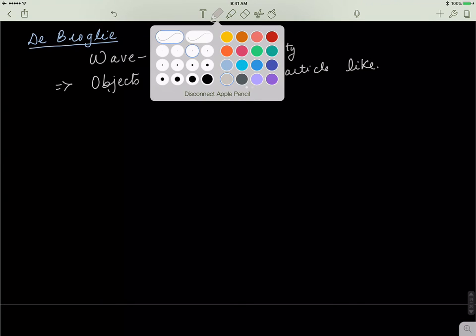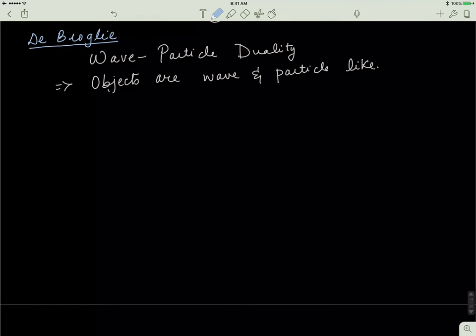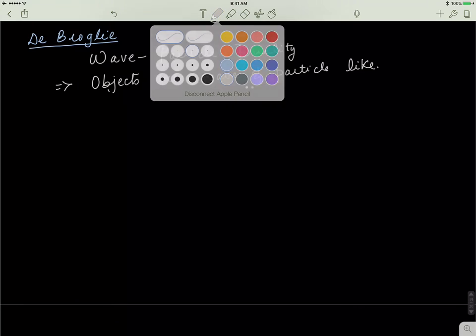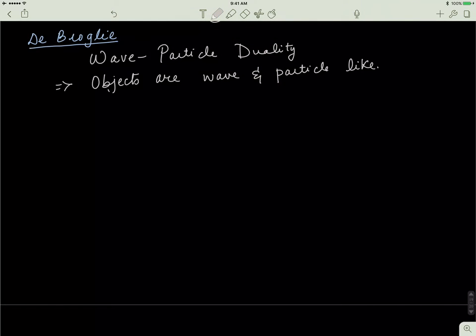So, what we'll do is we'll come up with a simple derivation that de Broglie came up with to explain this idea. So, he started off with this. He said, okay, well, if objects have a wave-particle duality, then their energy as a wave should equal to their energy as a particle.